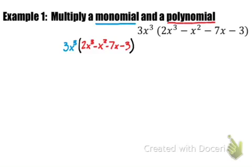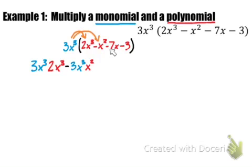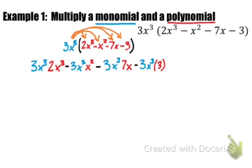So if you have to multiply a monomial by a polynomial, you want to make sure that you distribute the monomial to every single term in the polynomial. We're going to use multiplication when we actually simplify our expression. So we have 3x cubed times 2x cubed, minus 3x cubed times x squared, minus 3x cubed times 7x, and then minus 3x cubed times 3. Just to reiterate, when we distribute our term, we are using multiplication between each product.